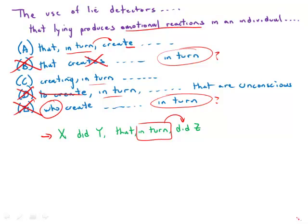That leaves us with C and E. What's problematic about C is that it seems that 'creating' harkens back to 'lying,' and that's the kind of parallel we're trying to create. In fact, what we're trying to do is say that 'create' is another sequence, in turn, with 'produce,' so it should be in the same form as 'produce.'